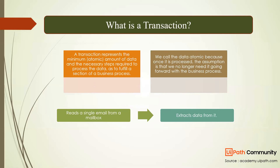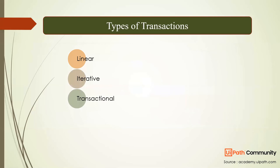For example, reading a single email from a mailbox and extracting data from it — that is a transaction. Transactions are always atomic. The assumption is: once you have read and extracted the data, you no longer require that thing. So a transaction is a single atomic unit that fulfills the business requirement.